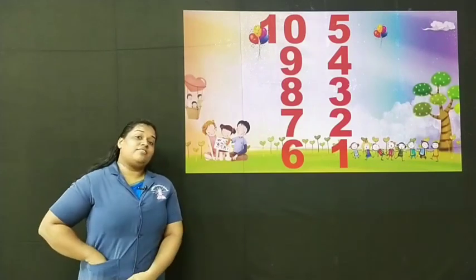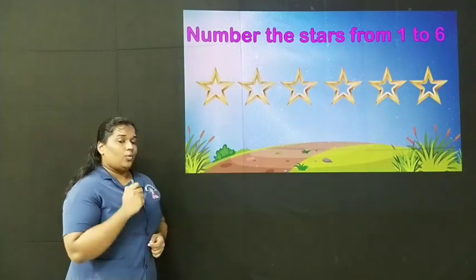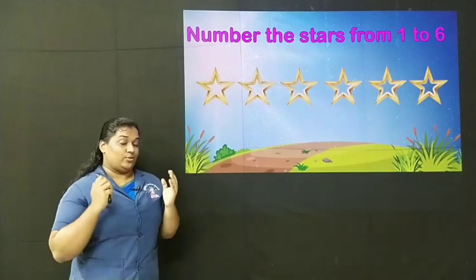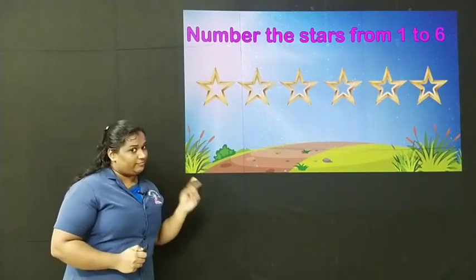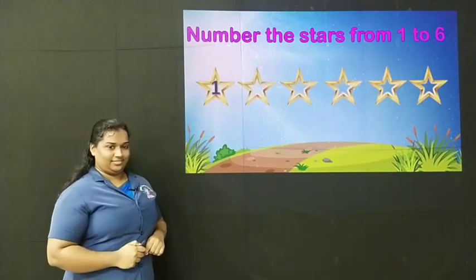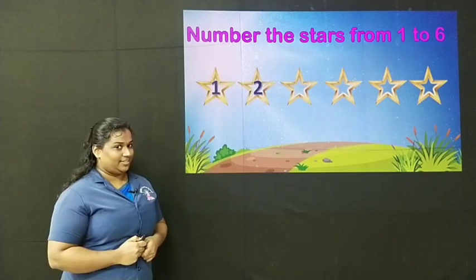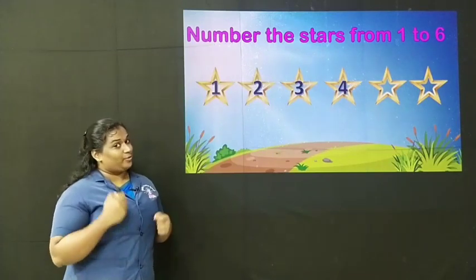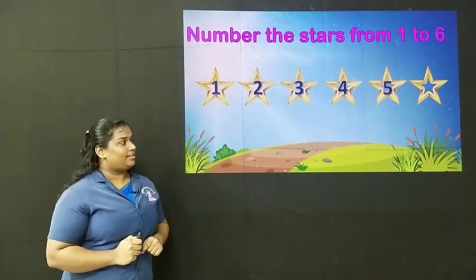Now let us solve some exercises related to forward and backward counting. Number the stars from 1 to 6. Here, 1 to 6 — do we have to count forward or backward? We have to count forward. So let's count forward from 1 and number these stars. The first star gets number 1, the second star gets number 2, the third star gets number 3, the fourth star gets number 4, the next star gets number 5, and the last star gets number 6.